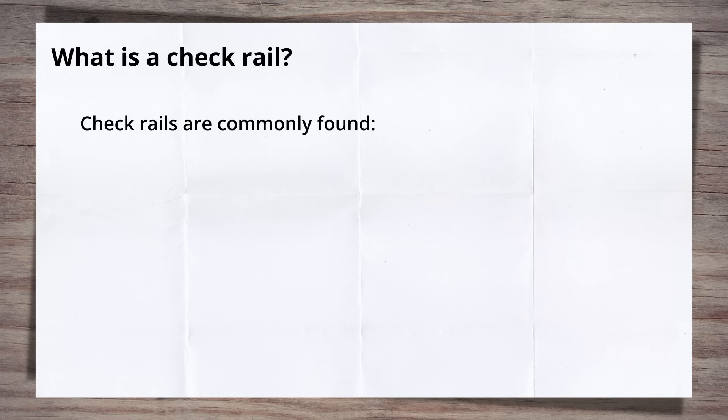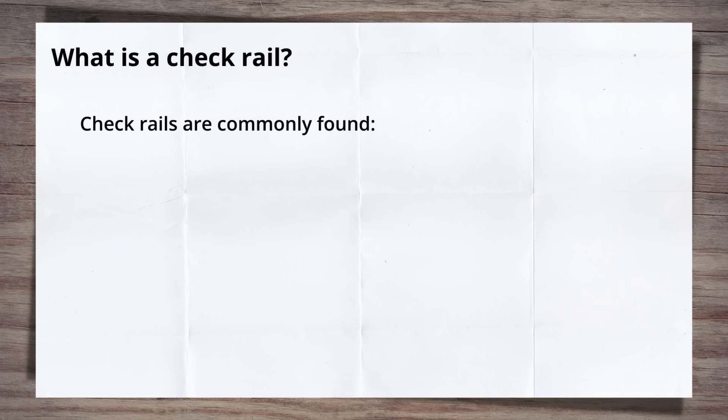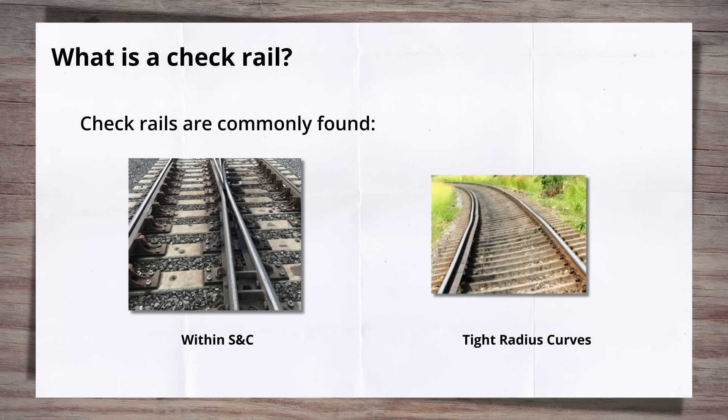Checkrails are most commonly found in two places on the railway: within S&C and on tight radius curves. Let's have a look at the reasons why they're in these specific places.